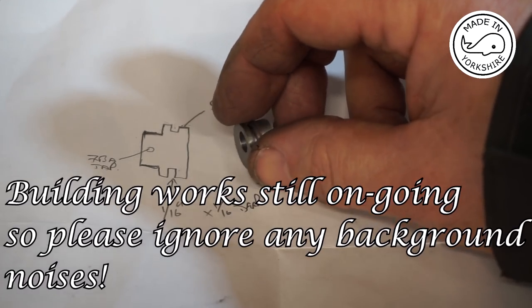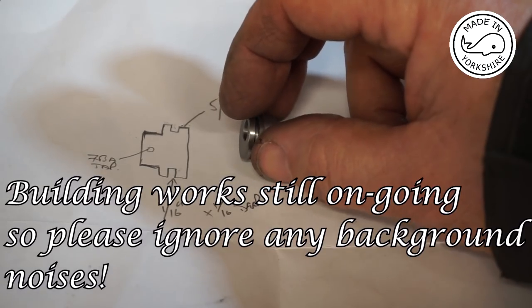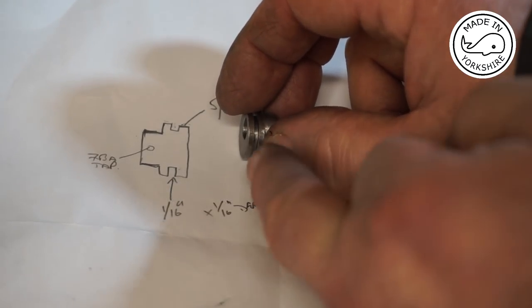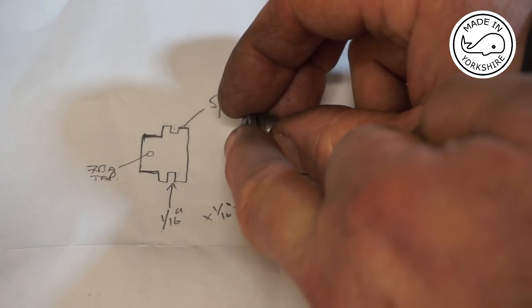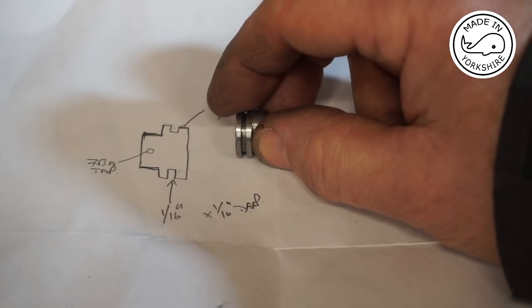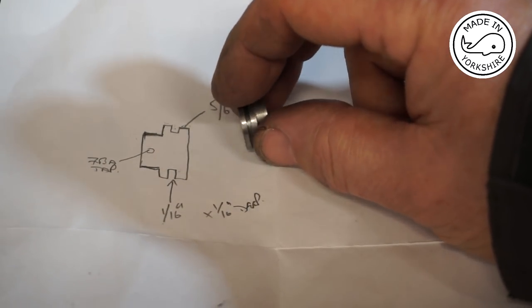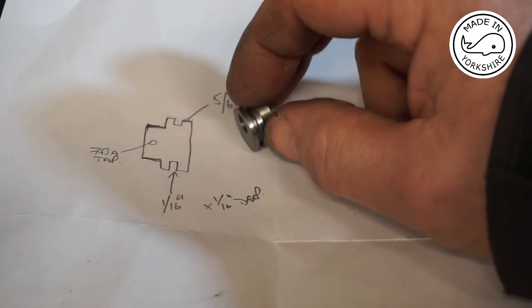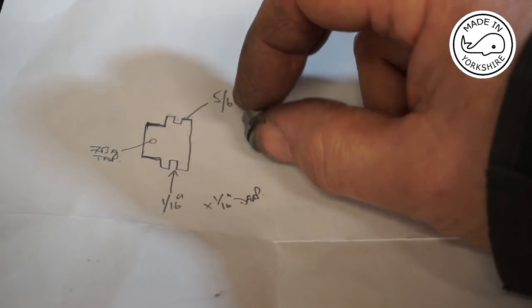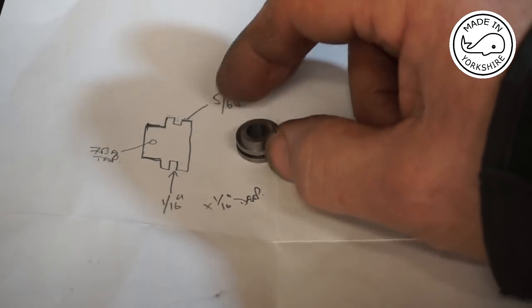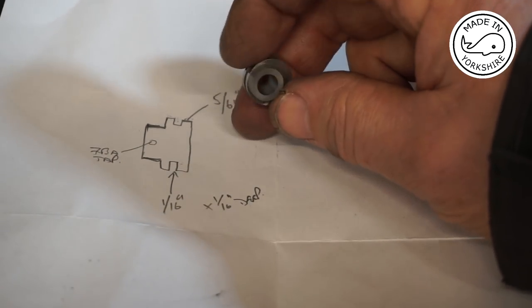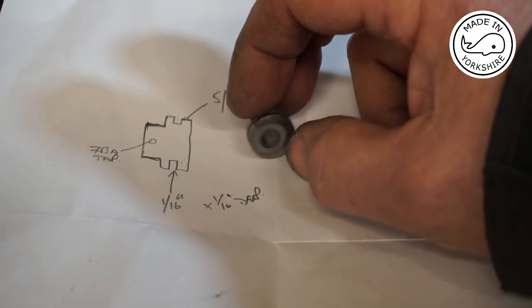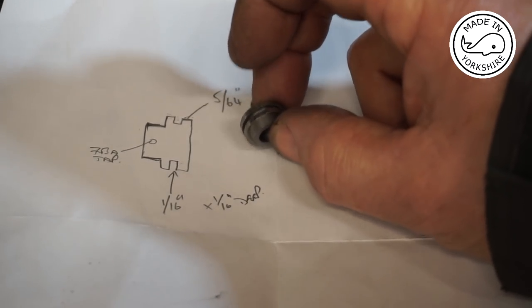Well that seems to have worked out okay. What I should have remembered to do before fully parting off is I should have used a lathe tool just to take this edge off here. I've just used a bit of wet and dry to go around the edge and cleaned that end up. But so far looking good. All I need to do is tap it to 7BA but I'll do that off camera.